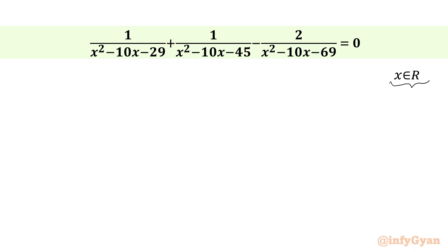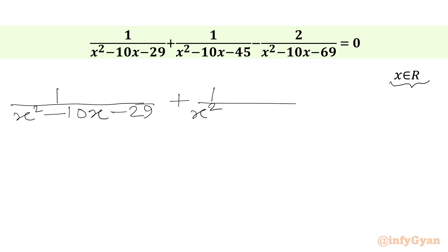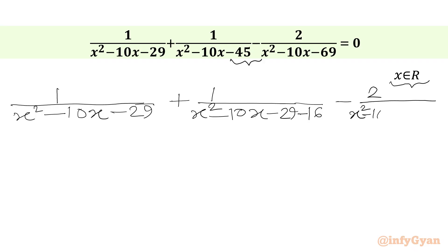Let us get started by writing our equation: 1 over (x² - 10x - 29) plus 1 over (x² - 10x - 45), which we can write as minus 29 minus 16, then minus 2 over (x² - 10x - 69), which we can write as minus 29 minus 40. The sum equals 0.